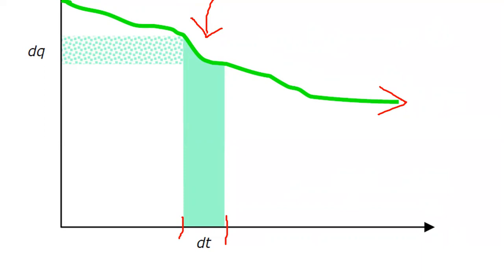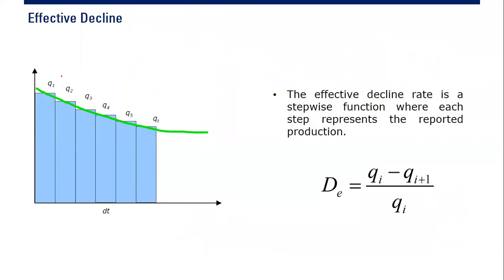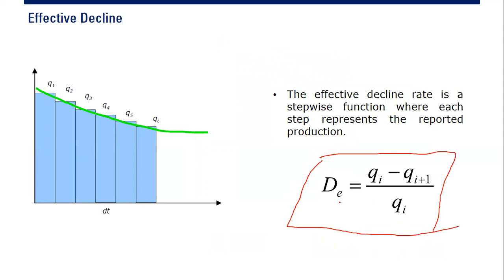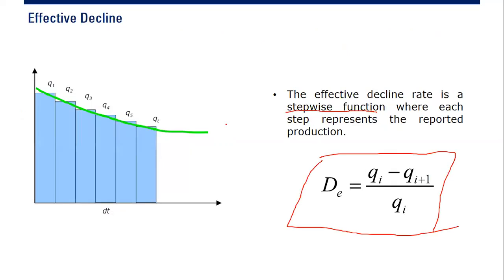If you want to do analysis or research, this is the theoretically and mathematically correct way to express the decline. We also have another thing, which is effective decline. What is it? Effective decline is a stepwise function, where each step represents the reported production. The formula is: effective decline De equals qi minus qi+1 divided by qi. This is a stepwise function, as opposed to the continuous function in the case of nominal decline.